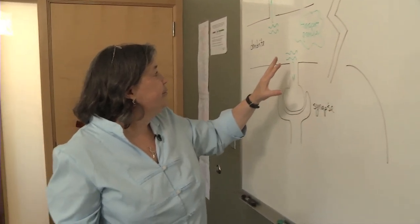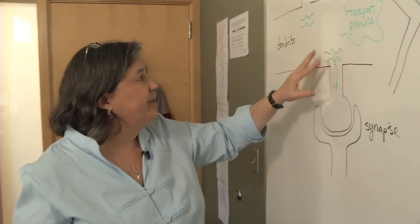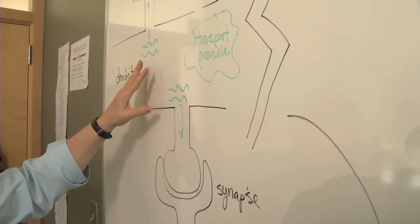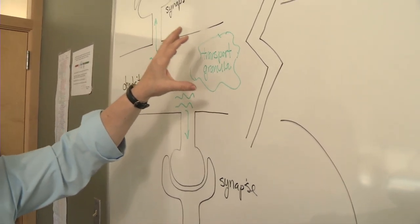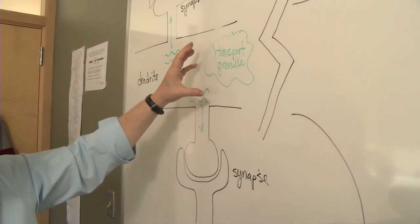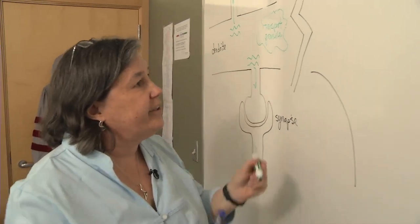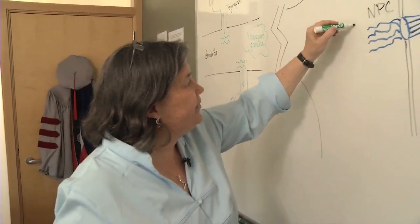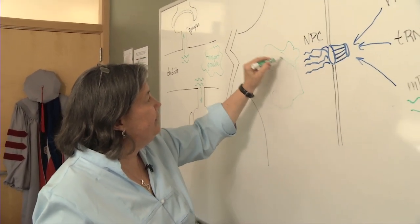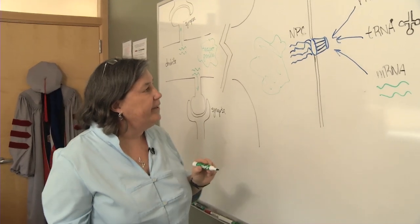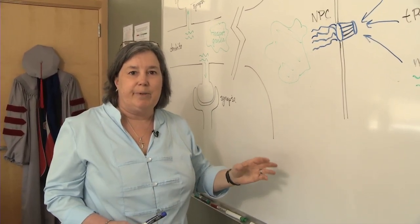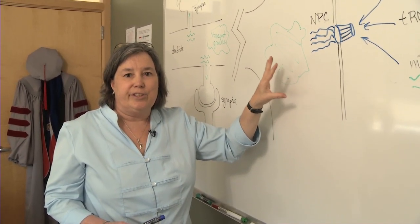However, some cells rely on localized translation of RNAs, and often these RNAs seem to be transported in large granules called transport granules. If we put these transport granules to scale next to the nuclear pore, you can see that they're much larger than the nuclear pore complex. So an open question has been: where are these granules first assembled?